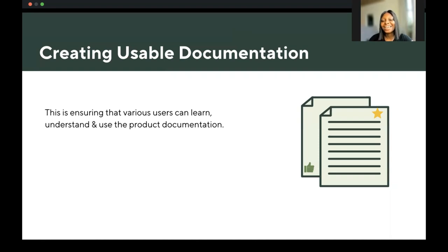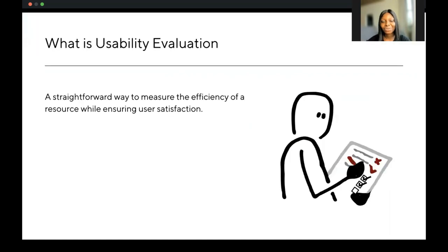Usually, users don't entirely read through documentation — regardless of whether it's a handbook, API documentation, or an insurance policy. The only reason most users come across technical documents is to solve a specific problem, get answers to a particular question, validate a fact, or follow instructions on how to use a tool. So why are we talking about usability evaluation? Usability evaluation is a straightforward way of measuring the efficiency of resources while ensuring user satisfaction.